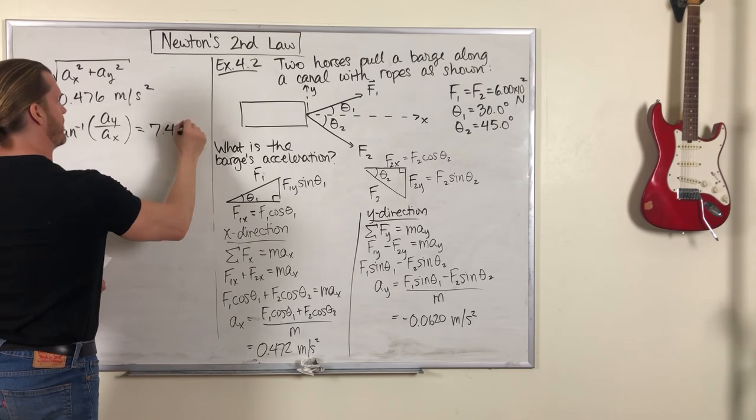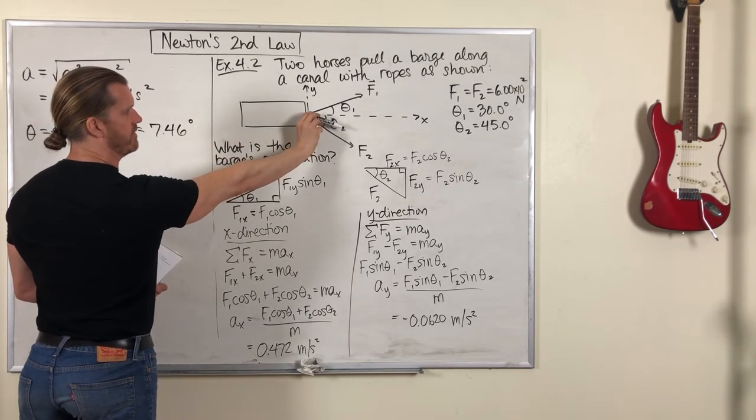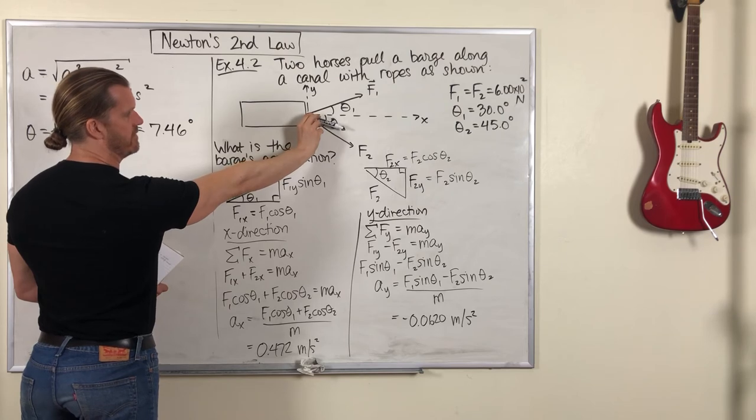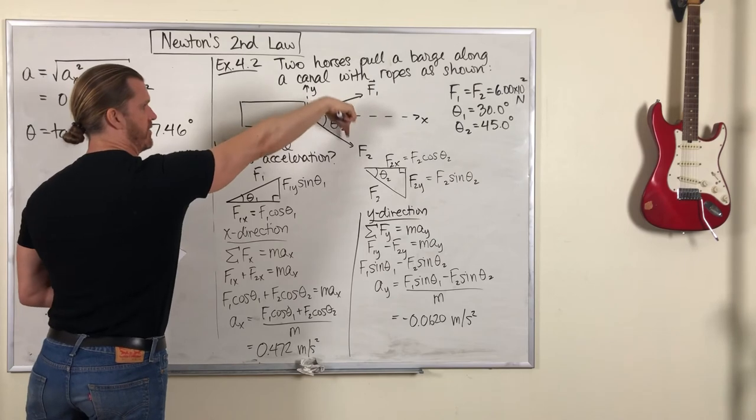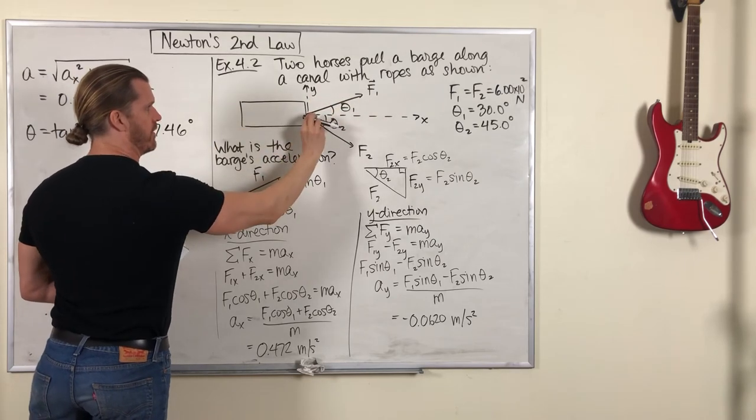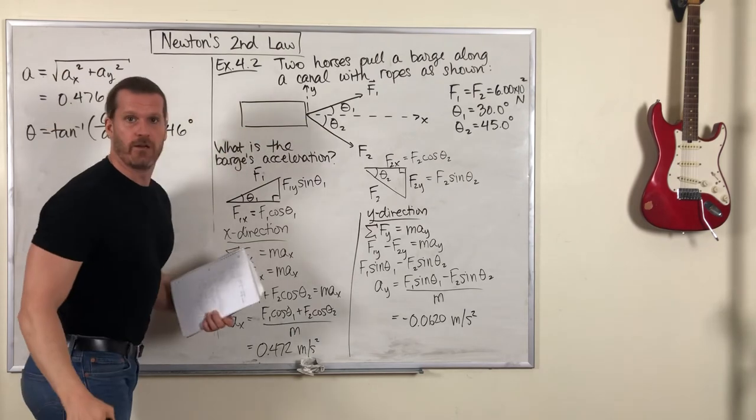The angle of that net acceleration is 7.46 degrees and it's going like that, because it has a positive X component and a negative Y component. So we're accelerating a little bit to the right of the forward direction.